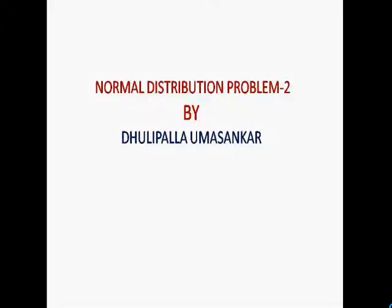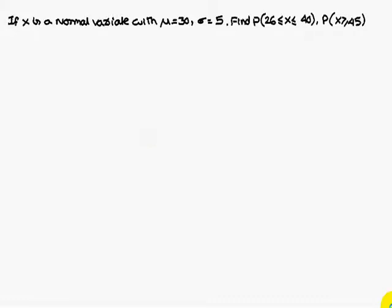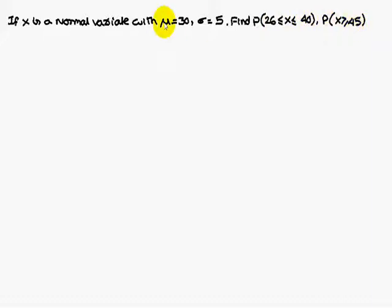Today we are going to discuss a normal distribution problem. If capital X is a normal variate with mean mu equal to 30 and standard deviation 5, find the probability of 26 less than or equal to X less than or equal to 40, and probability of X greater than or equal to 45. We consider marks between 26 and 40 and marks greater than or equal to 45, with mean 30 and standard deviation 5.